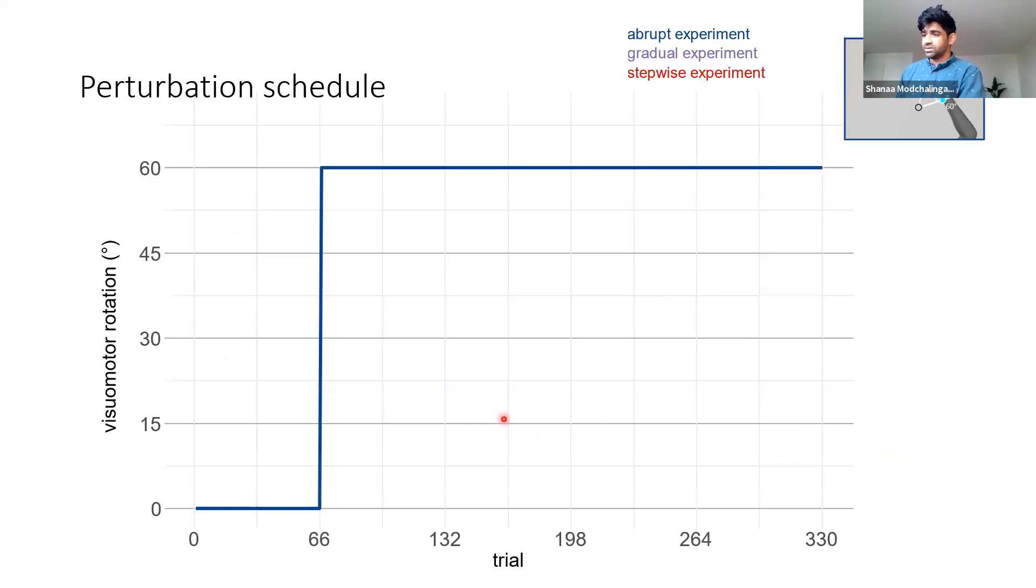Here's another explanation of our paradigm. This is a perturbation schedule. On the bottom here we have trials and on the y-axis we have what perturbation people experience. They have an aligned phase and in this abrupt group people experience a large 60 degree rotation on the very first trial. The stepwise group looks something like this where they do 15 degrees at a time until they reach a full 60 degree rotation.